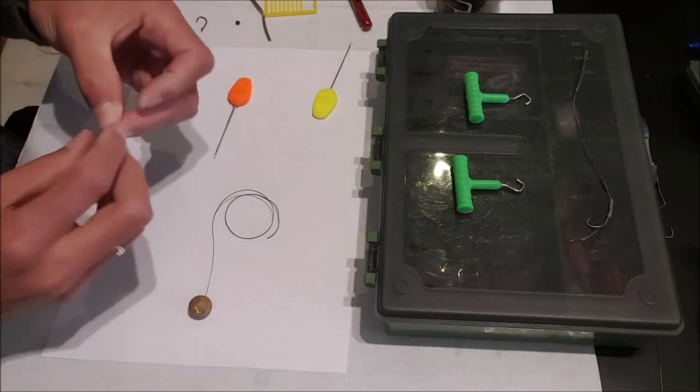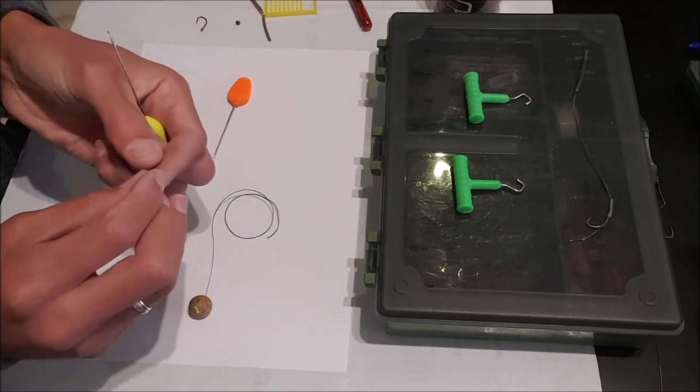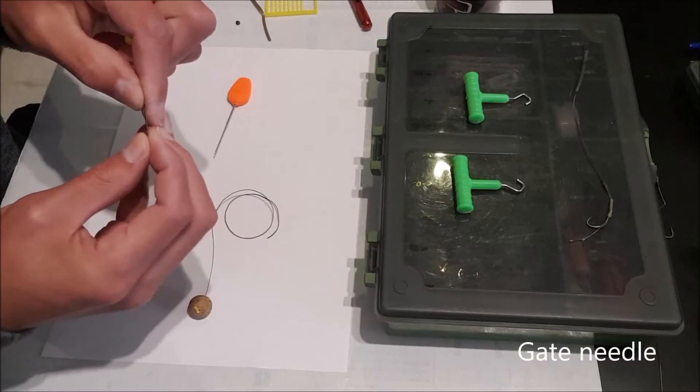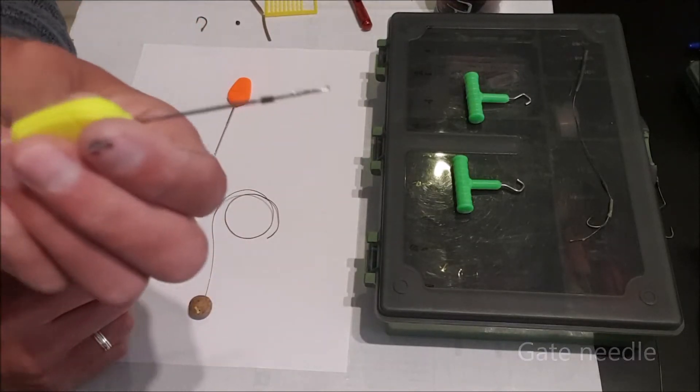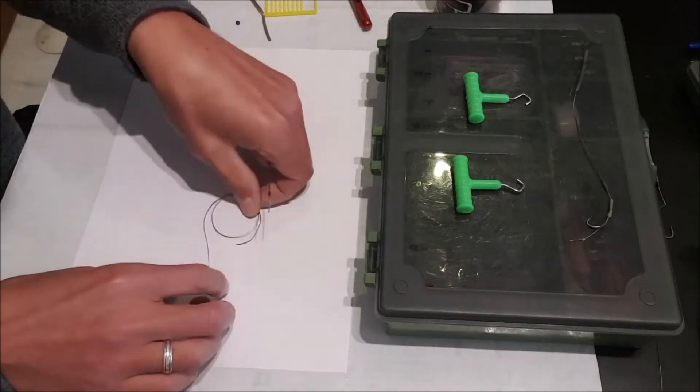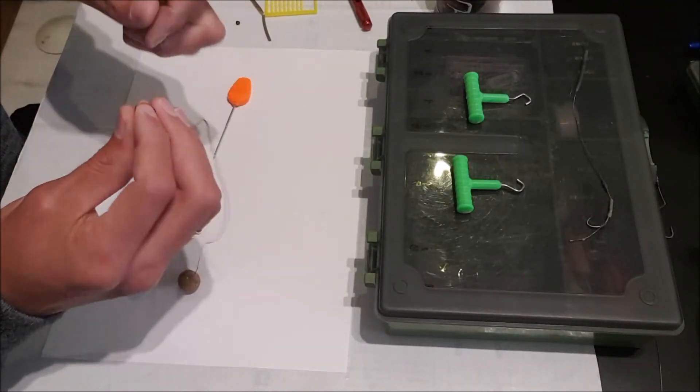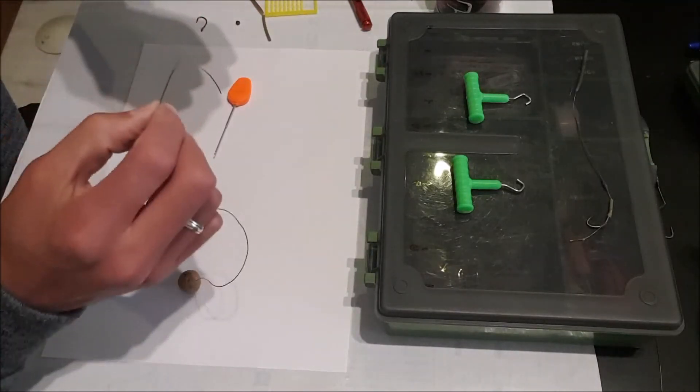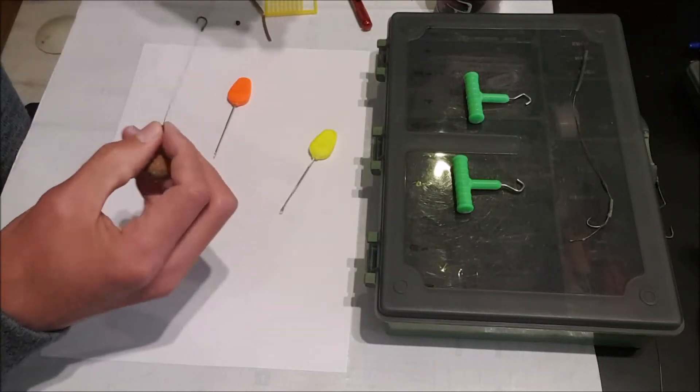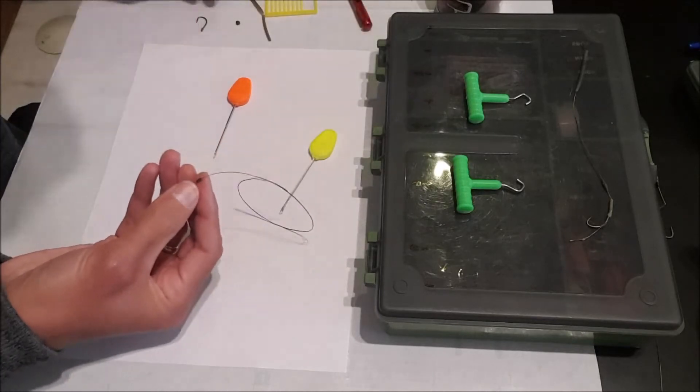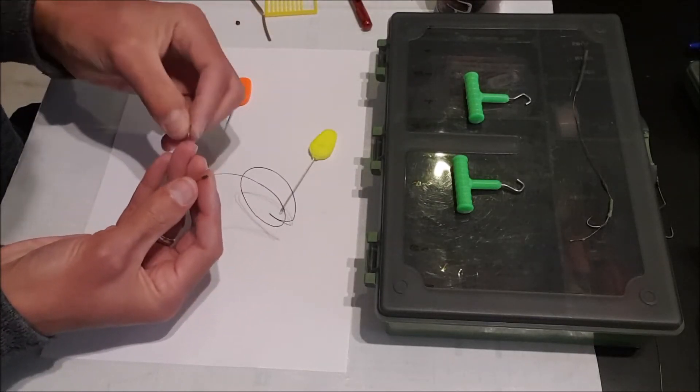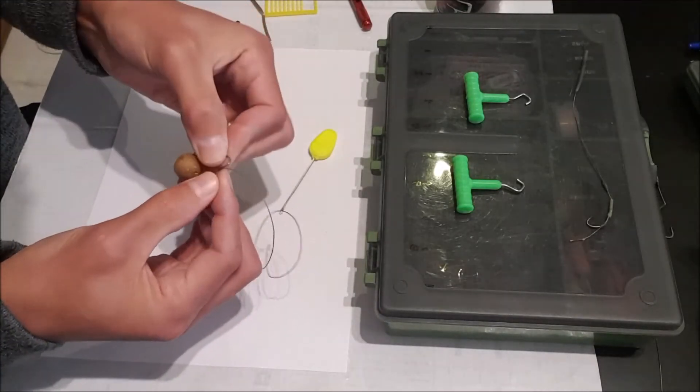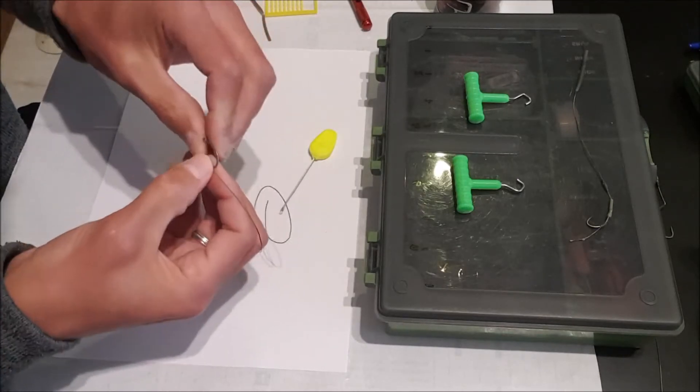Next you'll need a piece of silicone tubing which I forgot to mention. It's about 3 or 4 millimeters long. Put it over your baiting needle, slide that onto your hook link. Take your hook, point towards the boilie, push your silicone tube over the hook point.